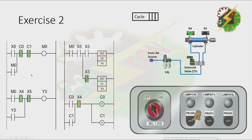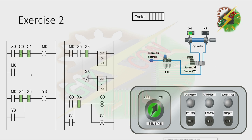Let's have our demonstration. Now let's turn on the selector switch and press PB1 again. Now let's go to our next exercise.